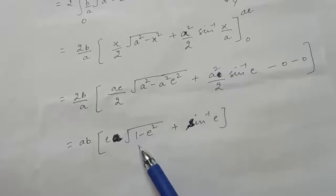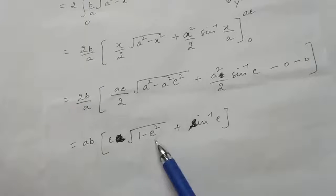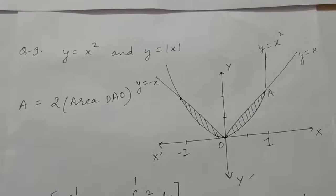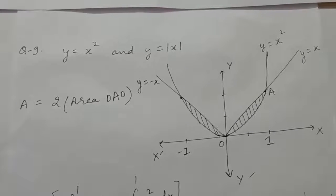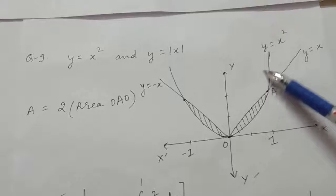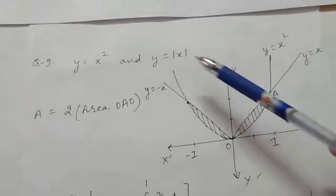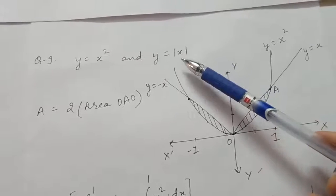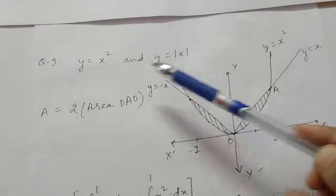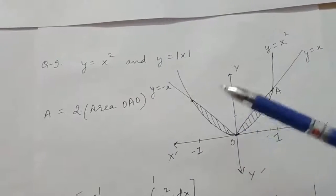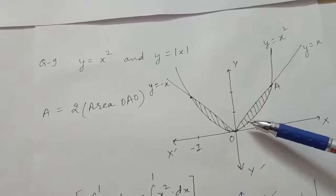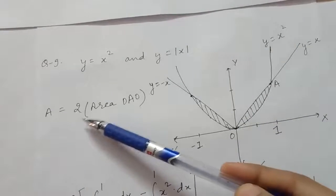After solving, you get the answer as ab × (e√(1 − e²) + sin⁻¹e). Question 9 of Exercise 8.1: find the area of the region bounded by the parabola y = x² and y = |x|. Draw the graph of y = x², and the graph of y = |x|, which is a V-shaped graph. The area will be this portion plus this portion, so find the area of one portion and multiply by 2.